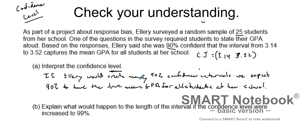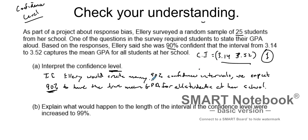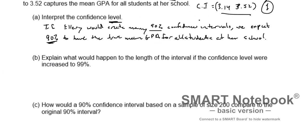So if you recreate many 90% confidence intervals many many times — this is just one time, she got a point estimate, found a margin of error, and found one confidence interval — if you did this many times, we would expect 90% of those intervals to contain the true mean GPA for all students at her school. That's what a confidence level is: 90% of all confidence intervals created at the 90% level would contain the true mean GPA.